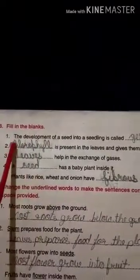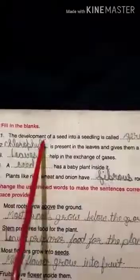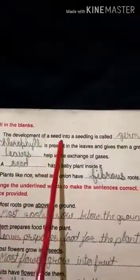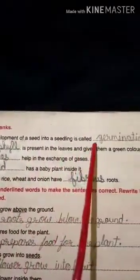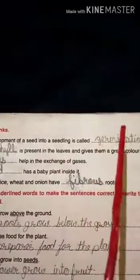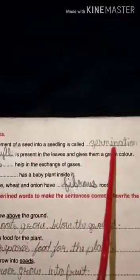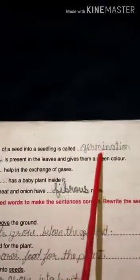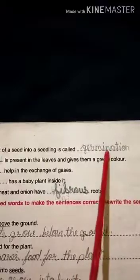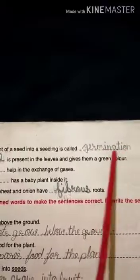Fill in the blanks. Number one: the development of a seed into a seedling is called germination — G-E-R-M-I-N-A-T-I-O-N, germination.